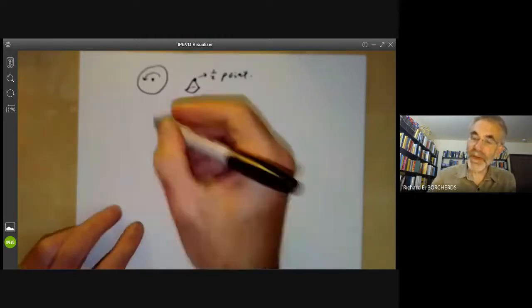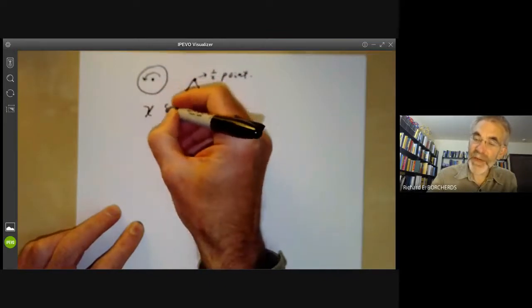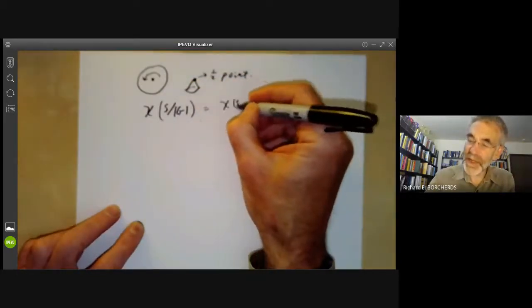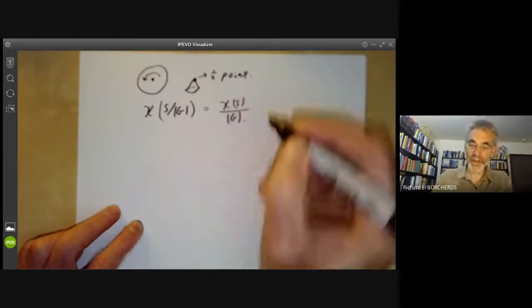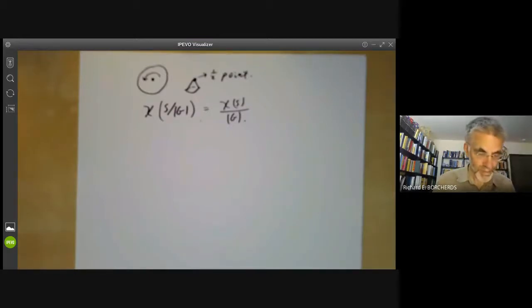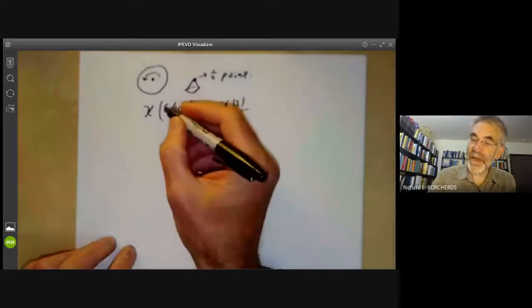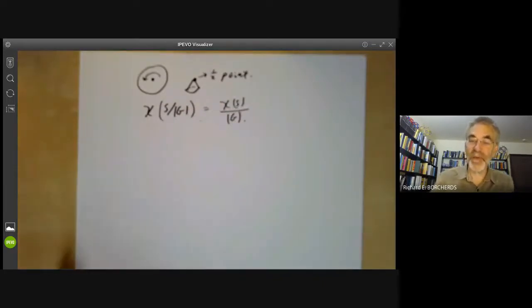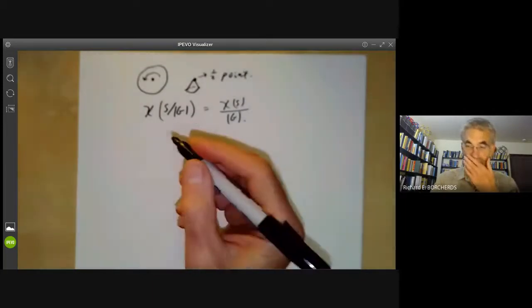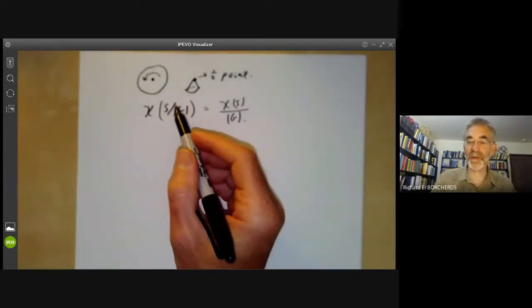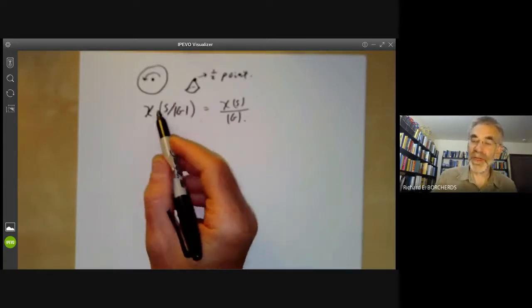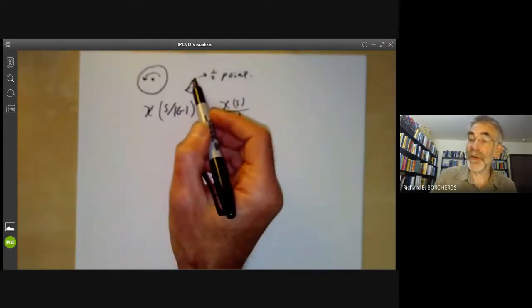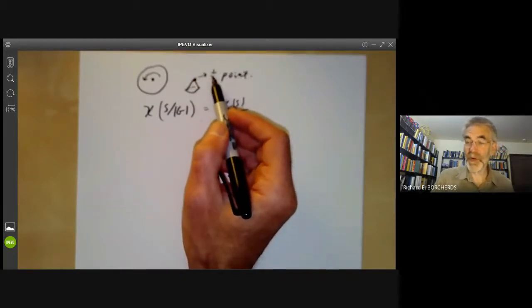The key point is that if you've got a surface S, then the Euler characteristic of S modulo a group G, where G is a finite group acting nicely on it, is equal to the Euler characteristic of S divided by the order of G. It's not too difficult to check this. If you've got a surface quotient out by group G, you can consider it as an orbifold or just as a surface again, so it will have two Euler characteristics: a topological one and an orbifold one.